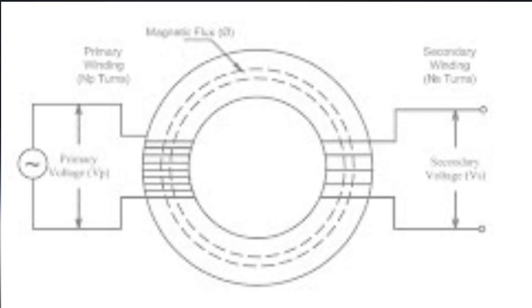On the other side of the transformer, we have the secondary winding. This is where the transformed or stepped voltage emerges. The number of turns in the secondary winding relative to the primary winding determines whether the transformer steps up or steps down the voltage.